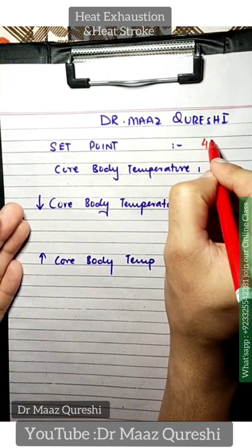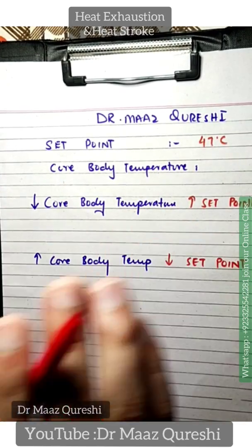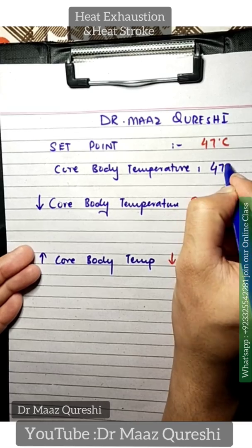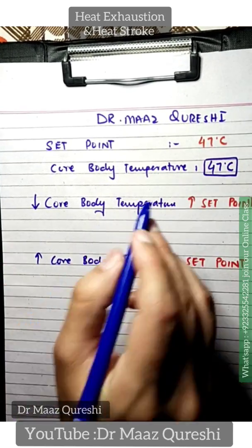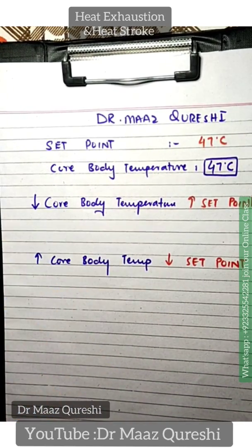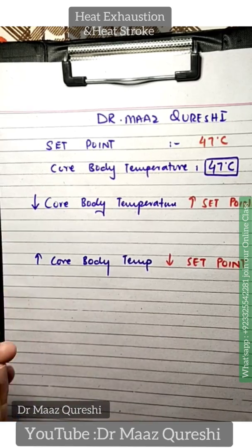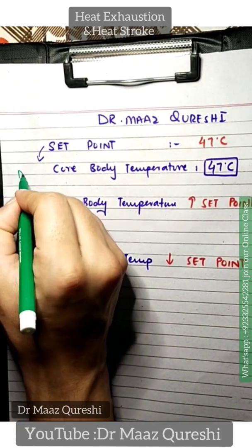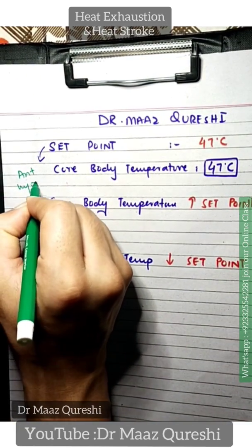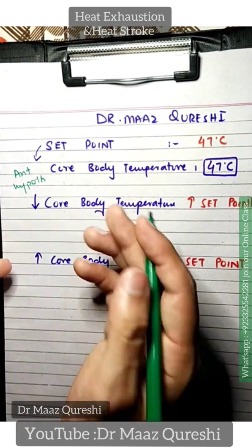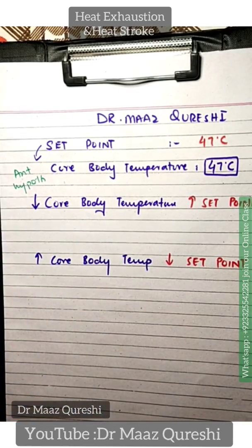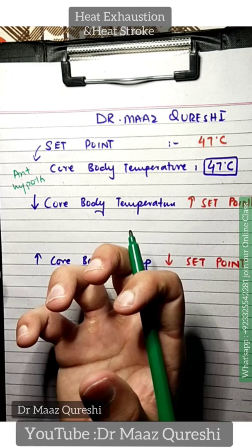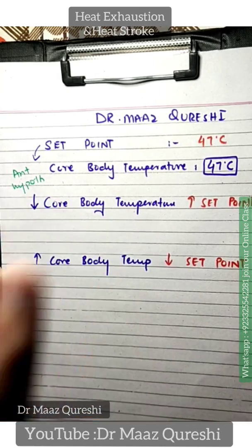Let us suppose that your set point is 37 degrees Celsius. This is your set point and the core body temperature should also match it. The core body temperature is sensed by your hypothalamus — specifically the anterior hypothalamus — which detects whether the core body temperature is high or low and signals what should be done.